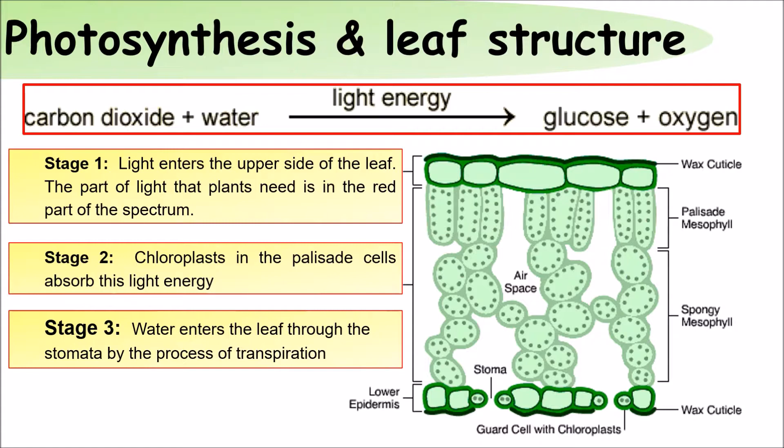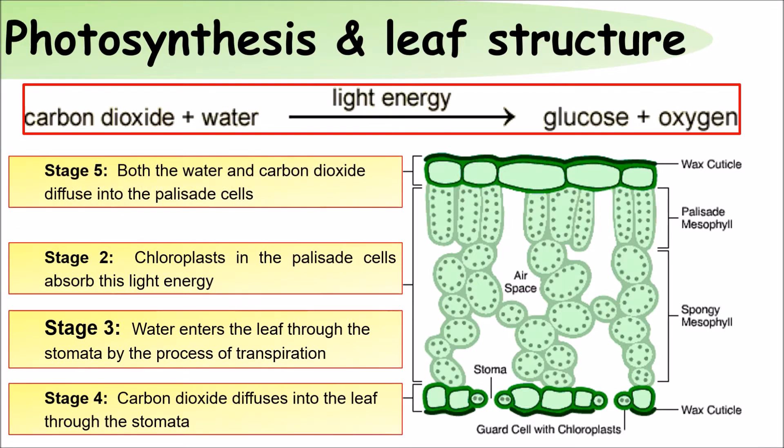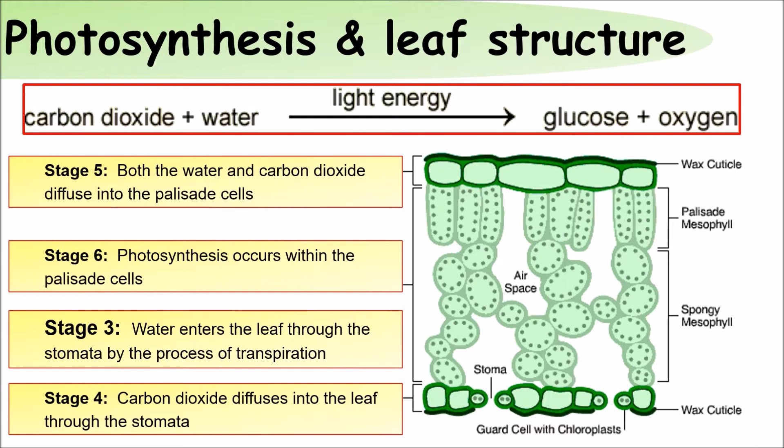Carbon dioxide diffuses into the leaf through the stomata. Both water and carbon dioxide diffuse into the palisade cells. Photosynthesis occurs within the palisade cells.